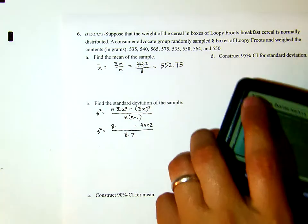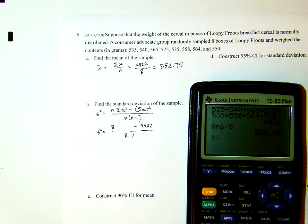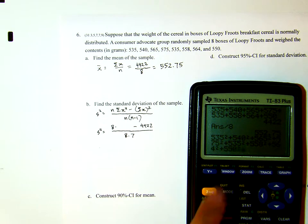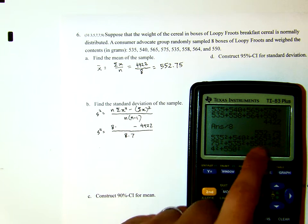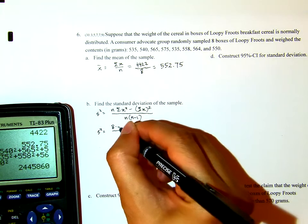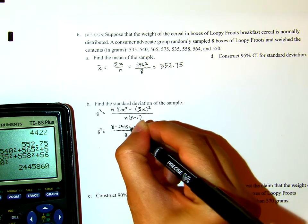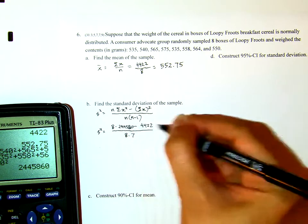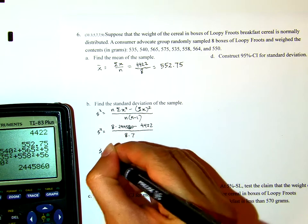Now let's find the sum of the squares: 535 squared plus 540 squared plus 565 squared plus 575 squared plus 535 squared plus 558 squared plus 564 squared plus 550 squared. That's 8 values, and the sum equals 2,445,860.